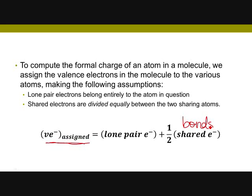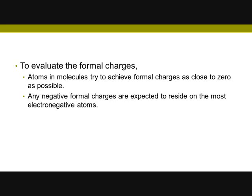When solving for formal charges, we want to get as close to zero as possible. If you get a plus three or minus three, that's not a valid, good structure — you'd want to change your structure to get rid of that. Zero is best. If you follow the method correctly, you'll get zeros. Sometimes you might have a negative one, and that's just how it is. Also, any negative formal charges are expected to reside on the most electronegative atoms, so if you have a negative one, that better be on oxygen or fluorine, not hydrogen.